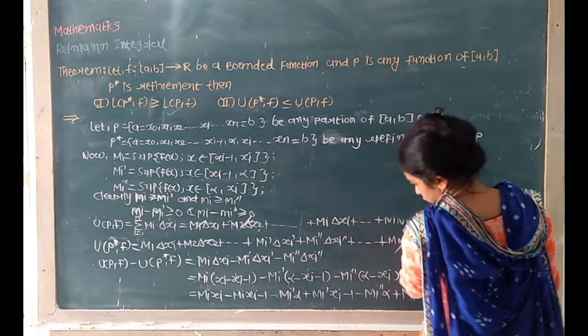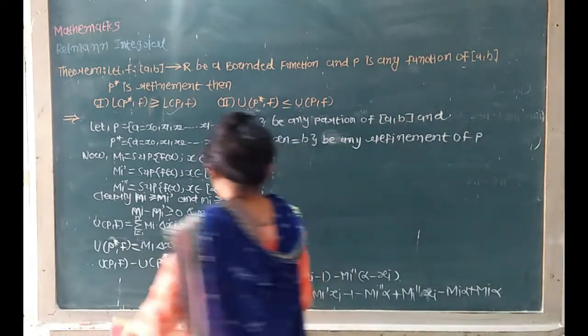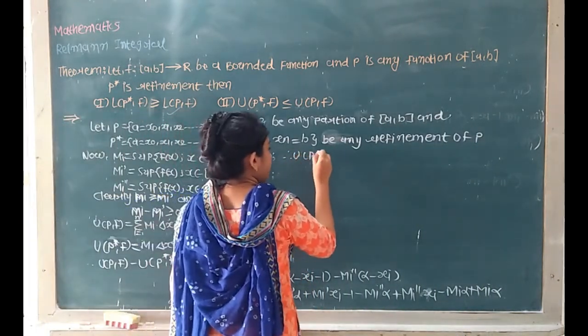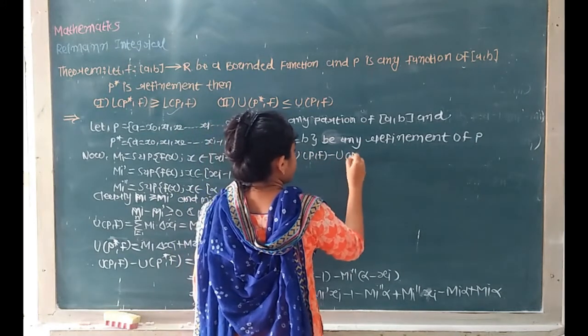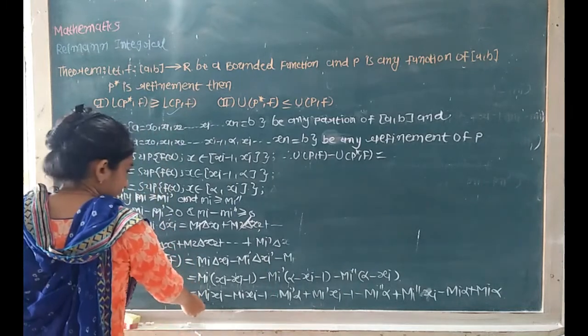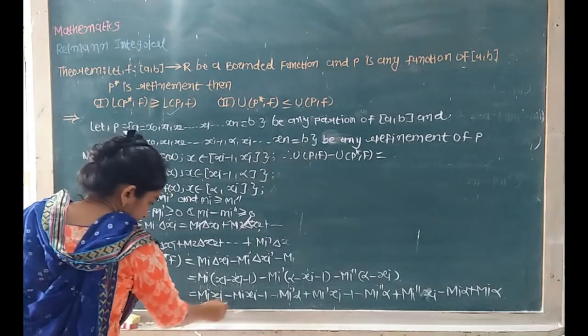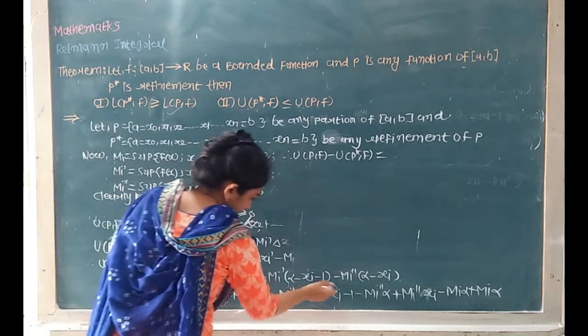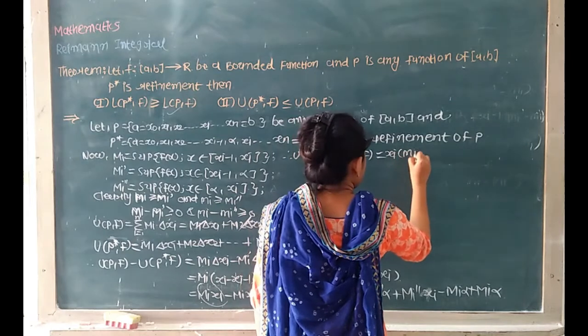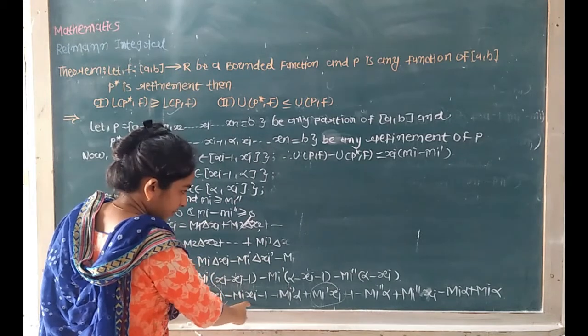Mi delta xi equals Mi times (xi minus xi minus 1) minus Mi dash times (alpha minus xi minus 1) minus Mi double dash times (xi minus alpha). We go here minus Mi dash alpha plus Mi dash xi minus 1.